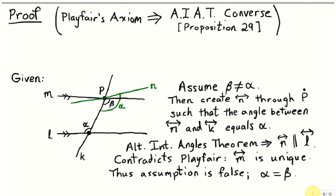So let's begin. First, we'll assume that Playfair's axiom is true, and we'll show that we can prove Proposition 29. We start with two parallel lines, L and M, and a transversal K which cuts through them. We want to show these two alternate interior angles, marked here with alpha and beta, are congruent.